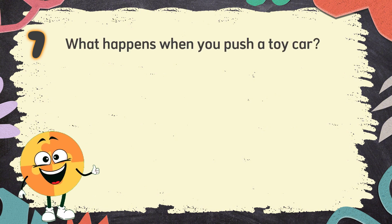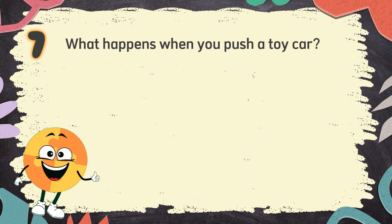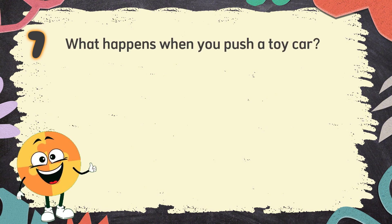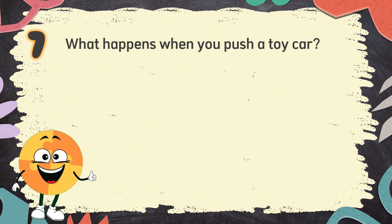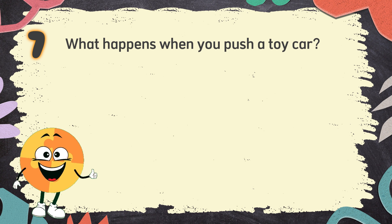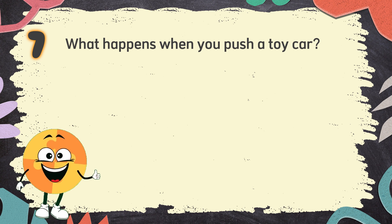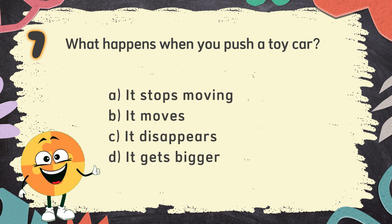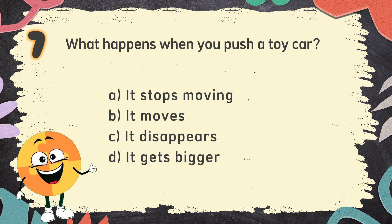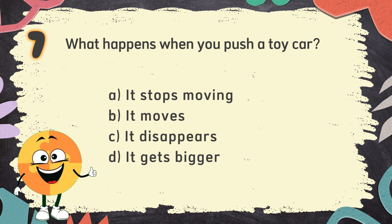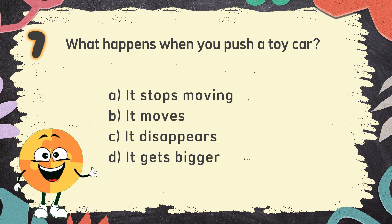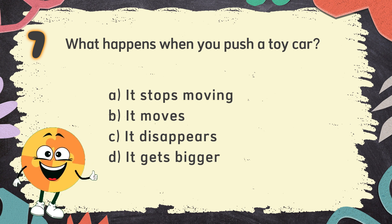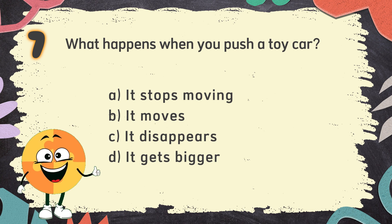Number 7. What happens when you push a toy car? The choices are: A. It stops moving, B. It moves, C. It disappears, D. It gets bigger.